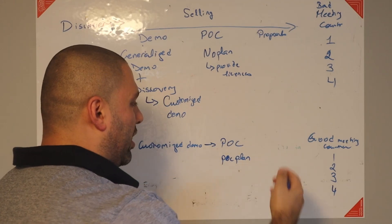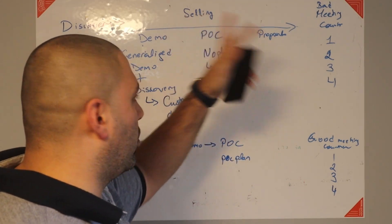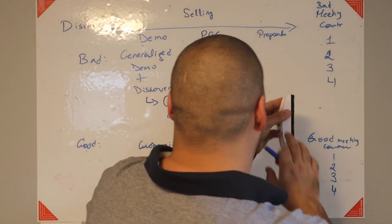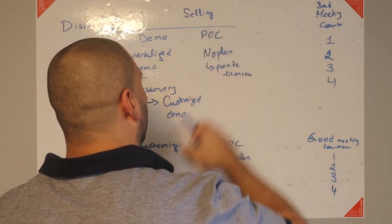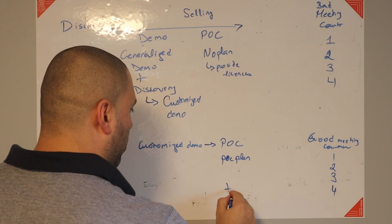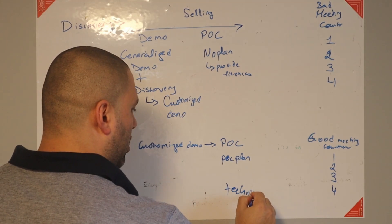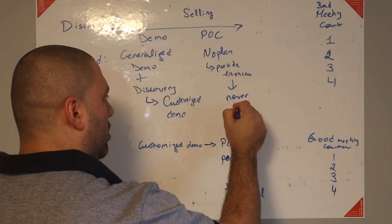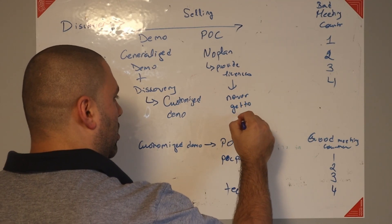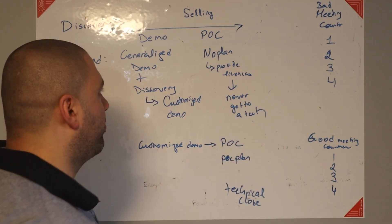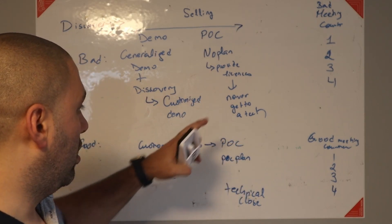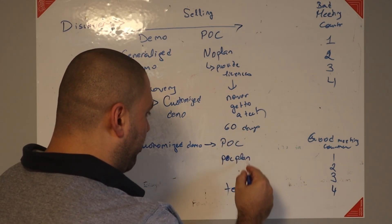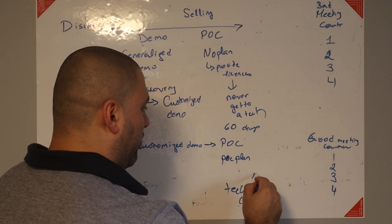And then we go into proposal. That's something that SEs work on with salespeople. That could be part of the negotiation process as well. But at this point, we get to a technical close. And here, we may never get to a technical close. That's the difference between the two. So same amount of meetings, but this could take 60 days. If planned well, this could take 15 to 30 days.